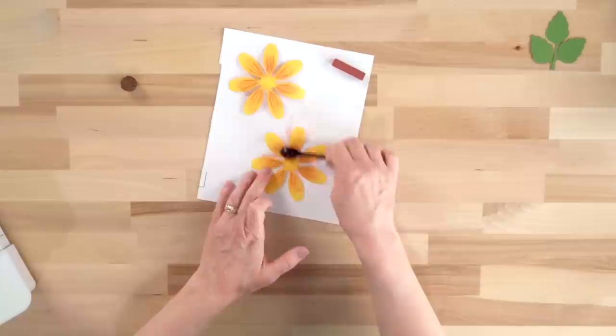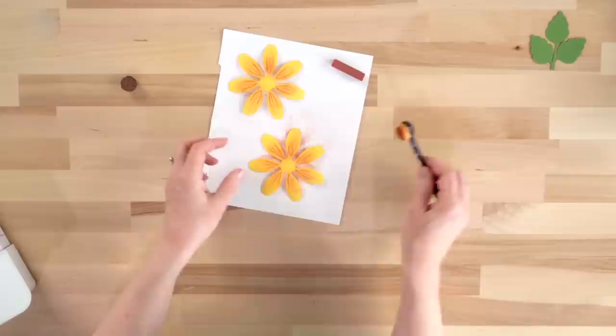I kind of like the brown on my sunflowers, this orangey brown. Okay, and that's all we do for coloring.